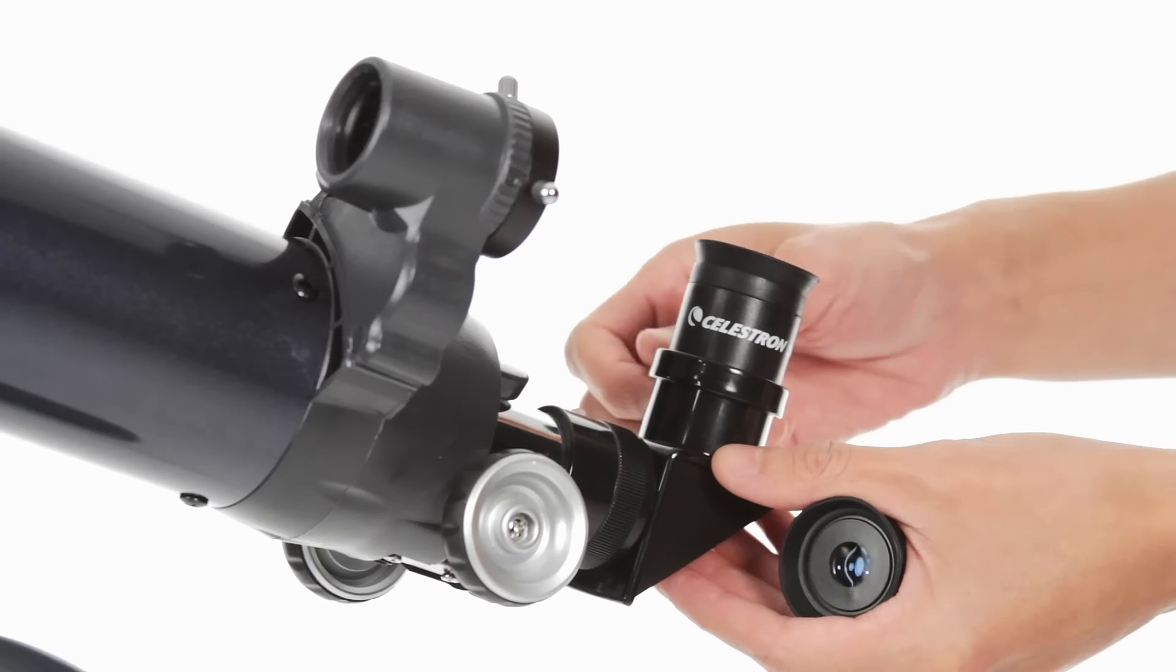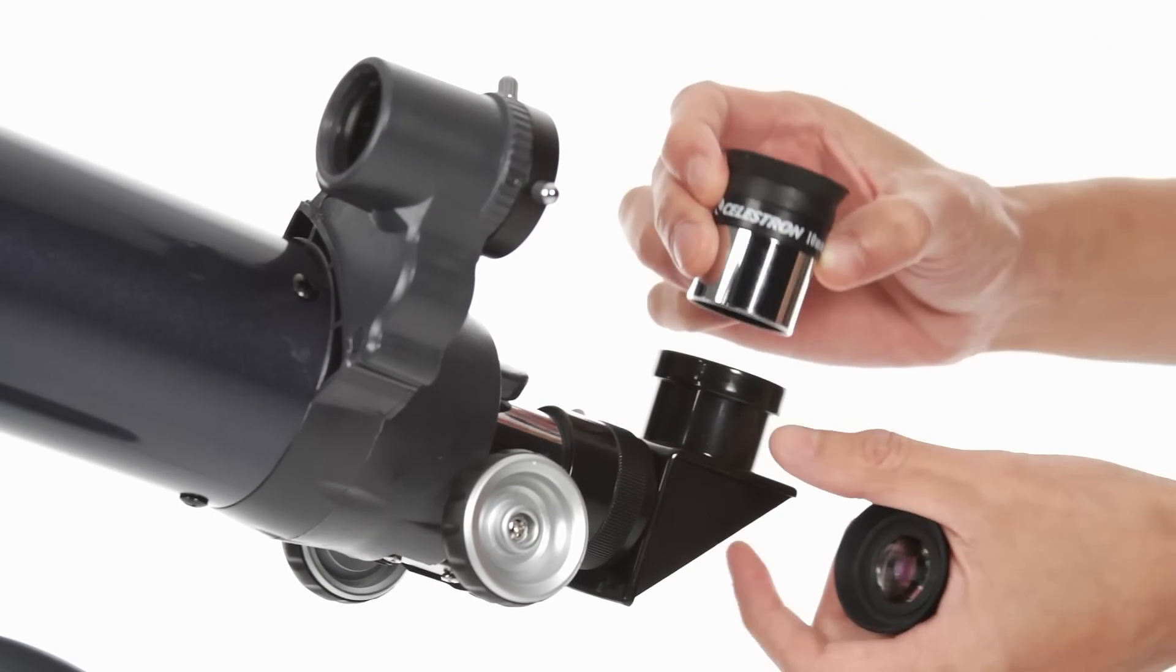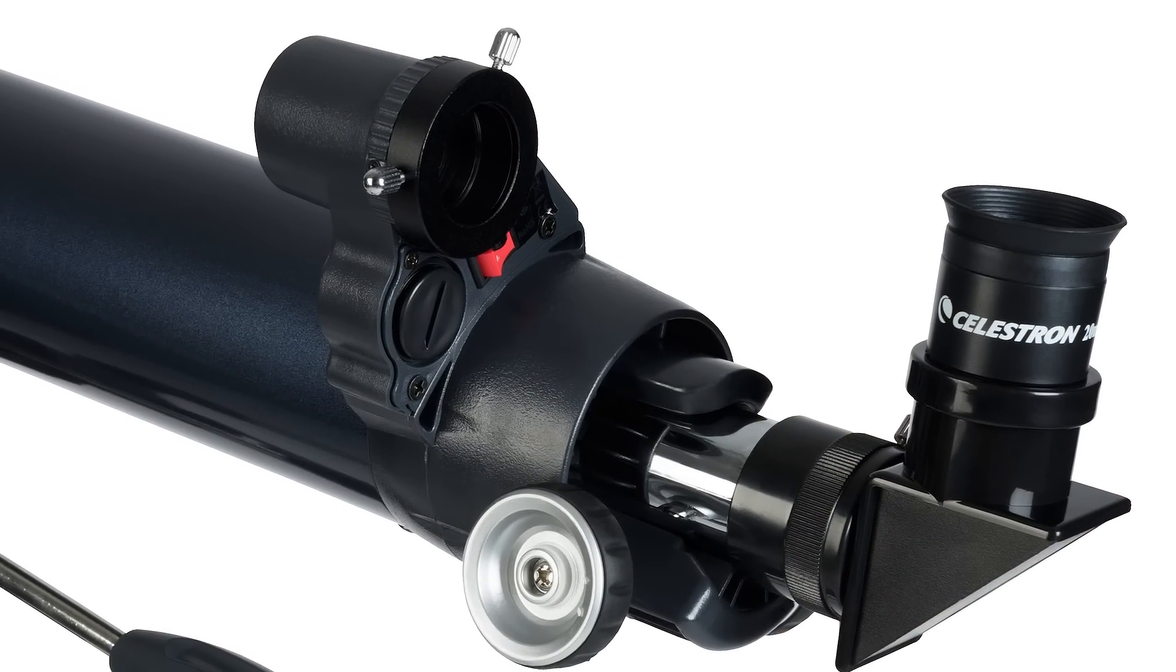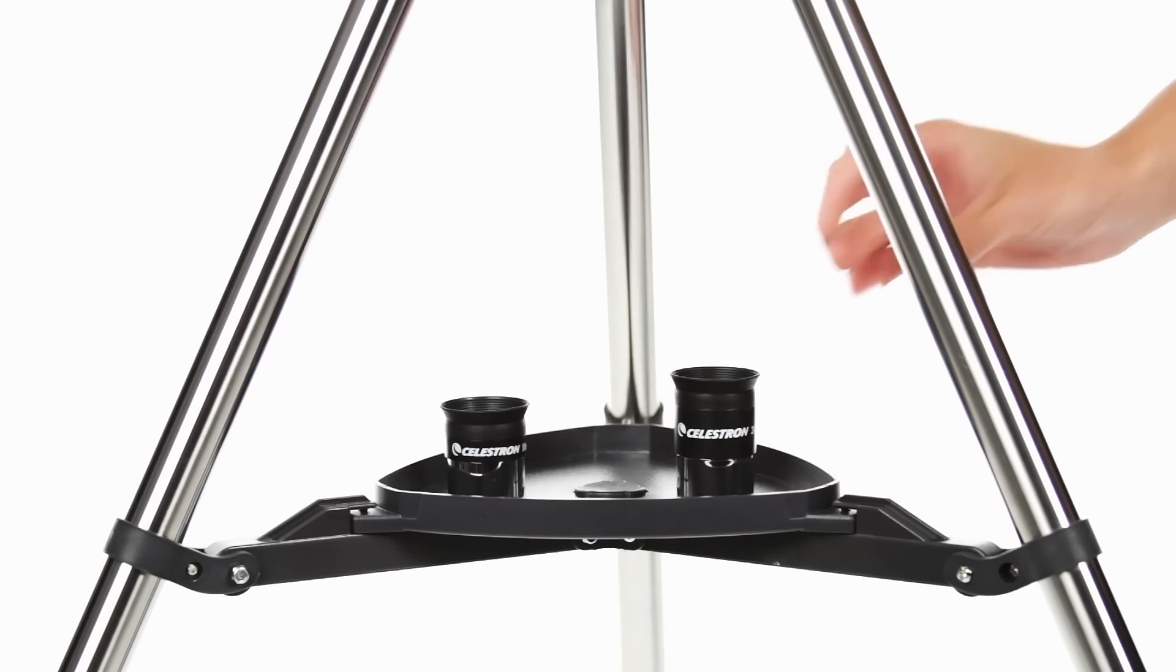Your AstroMaster includes everything you need for a great night of stargazing. Two eyepieces, a permanently mounted red dot finder scope, and a full-size lightweight steel tripod with accessory tray.